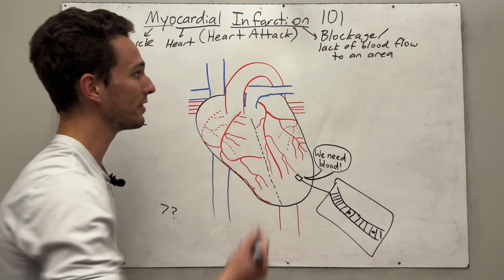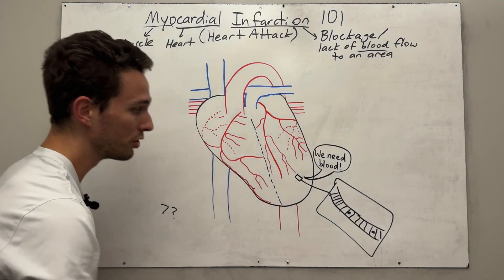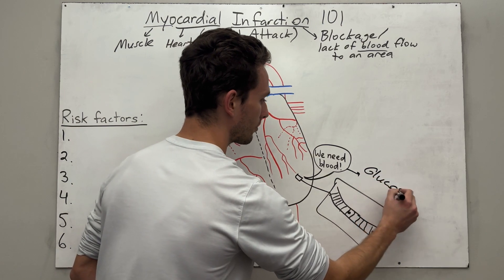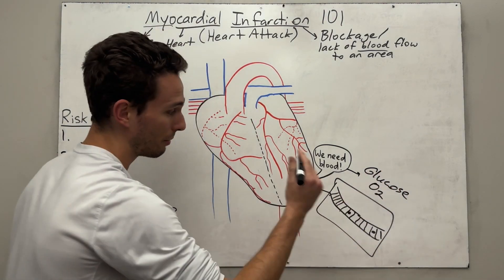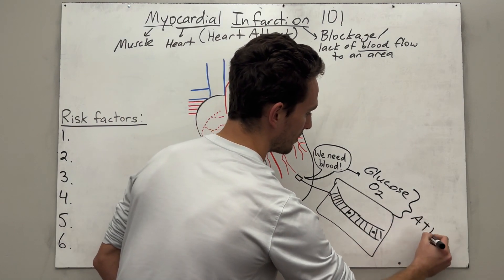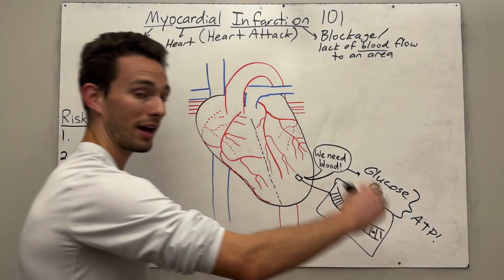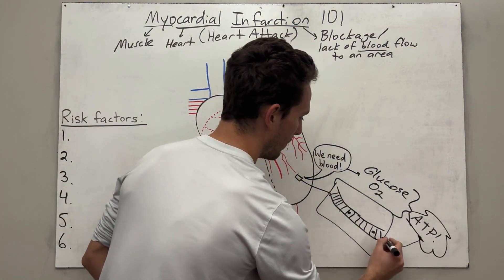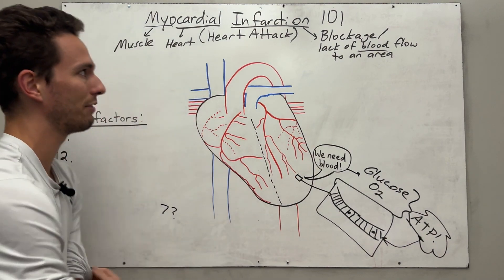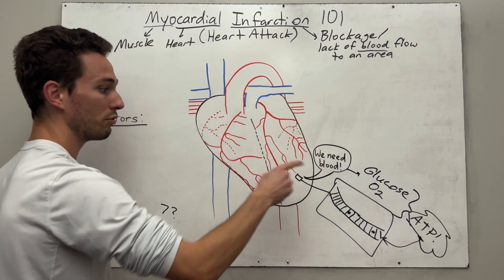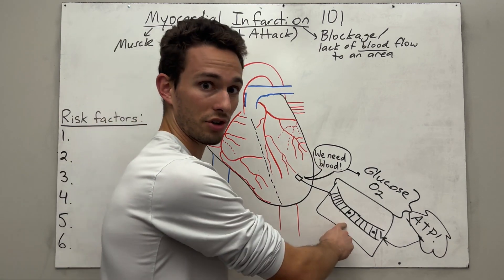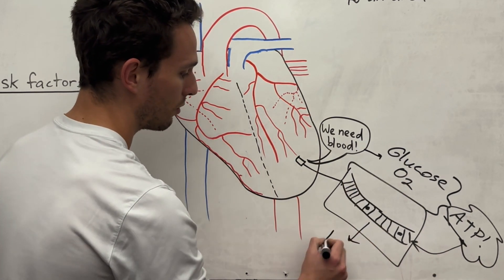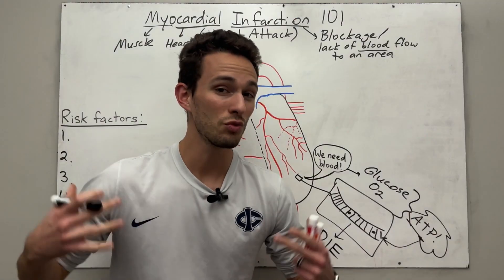How does the heart get the energy to do that? Well, the energy comes from what is in the blood itself. These muscle cells primarily need two things: glucose and oxygen. These two combine together to make the very important molecule ATP. If you haven't heard about ATP, I recommend you watch this video on ATP really fast. But this ATP directly powers the muscle cells to contract. So if we have a blockage or a lack of blood flow to the heart muscle itself, these muscles are going to get starved out of their energy source. And if they get starved out of their energy source for too long, they will end up dying.